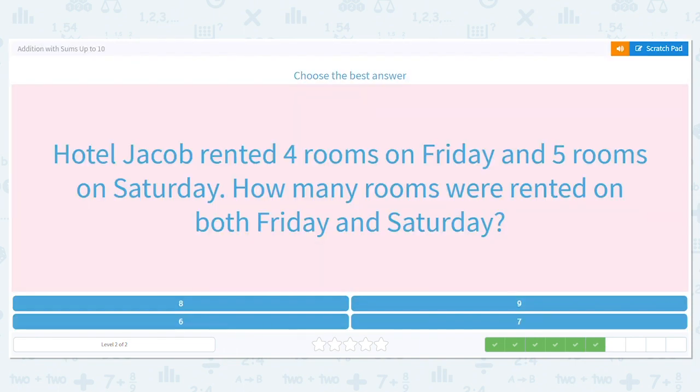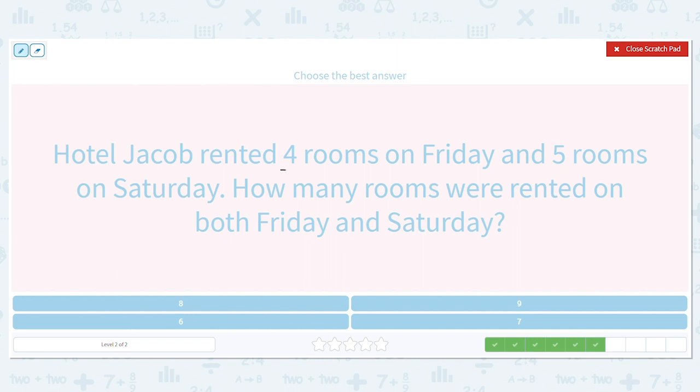Hotel Jacob rented four rooms on Friday and five rooms on Saturday. How many rooms were rented on both Friday and Saturday? Okay. How many on Friday? Four. How many on Saturday? Five. What key words tell you that we are going to add?